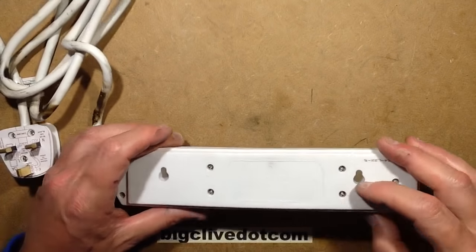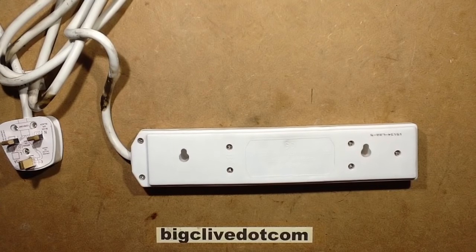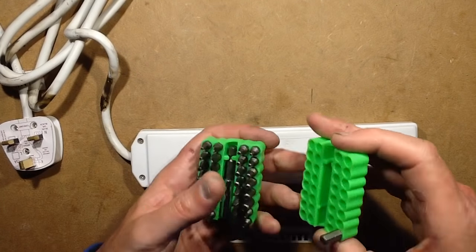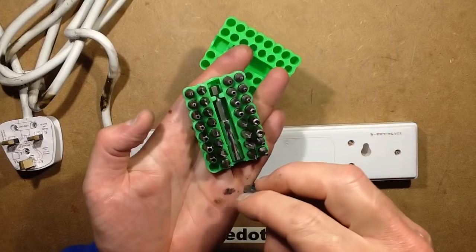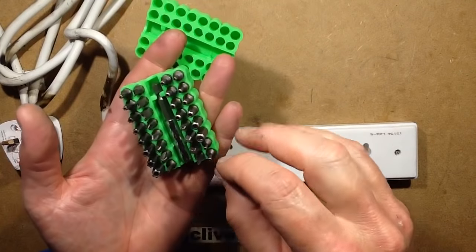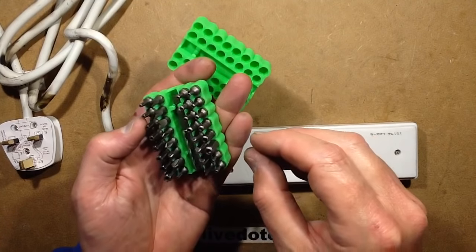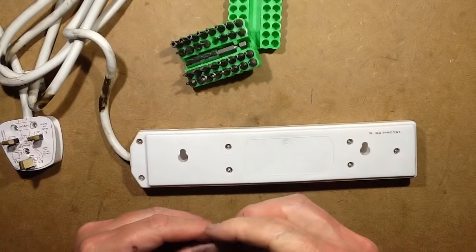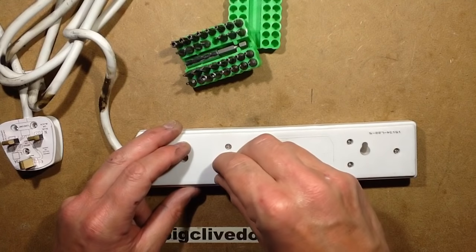So this is using tamper-proof screws, which is always a bit annoying. Let's see if one of my tamper-proof bits will open this. It's disgusting. So I'm looking for the tri-wing type bit that's going to fit.